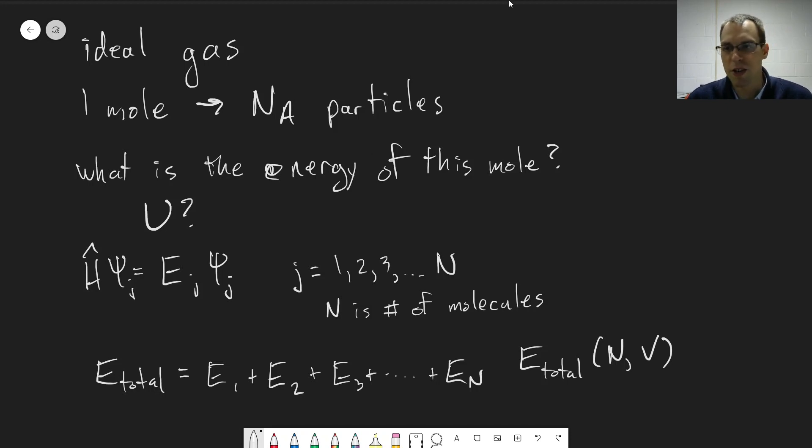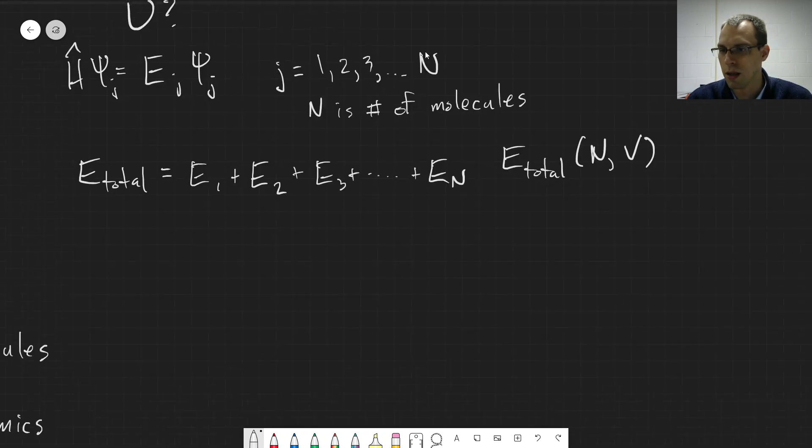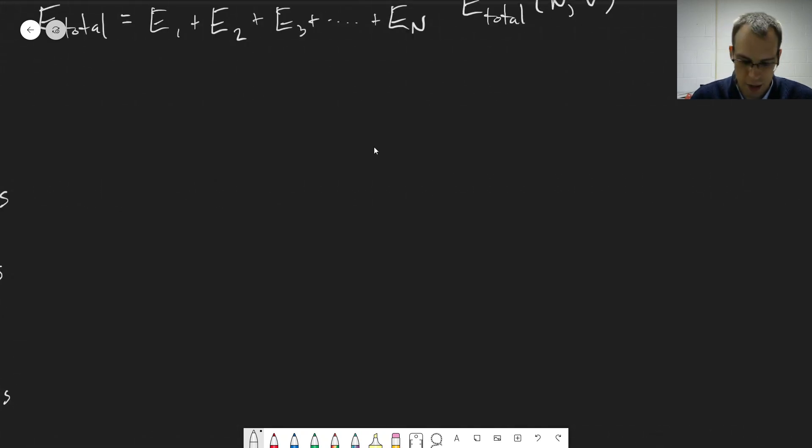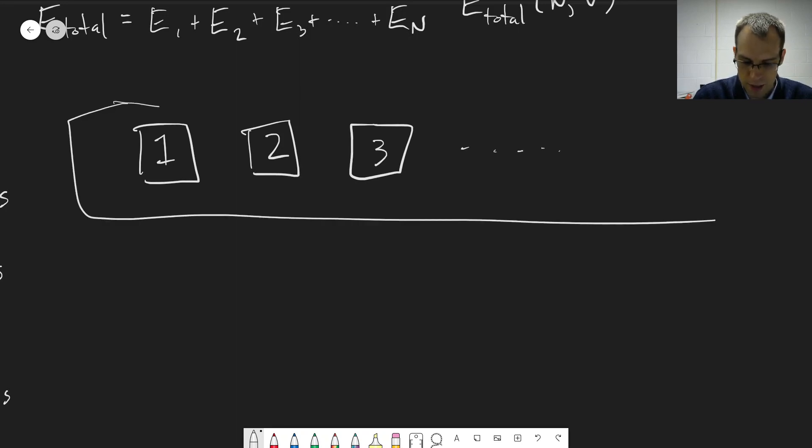Okay. So we've added up all the energies, and what we're going to do now, what we're going to do now is imagine that we can make a bunch of copies of our macroscopic system. So we have number one here, number two, number three, et cetera. And so this is a purely theoretical exercise here. We're not actually making copies. So each of these represents, you know, a mole of our gas, one mole of ideal gas.